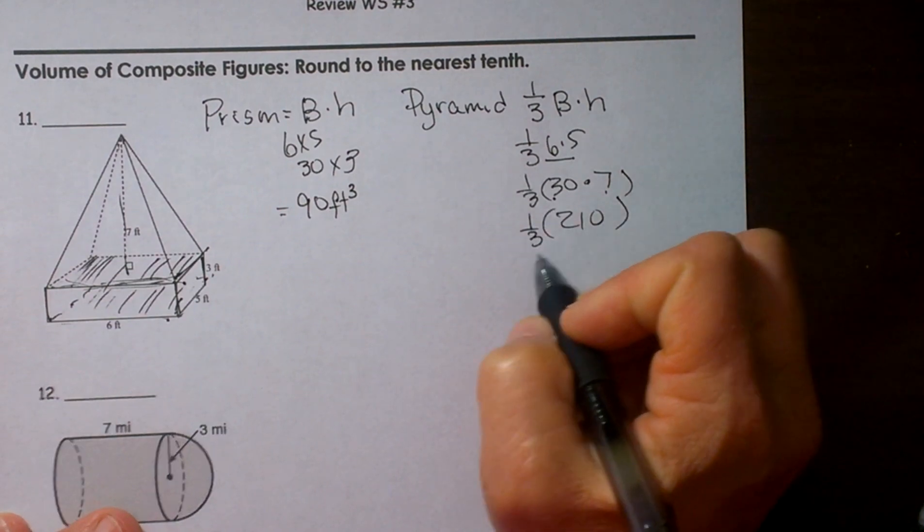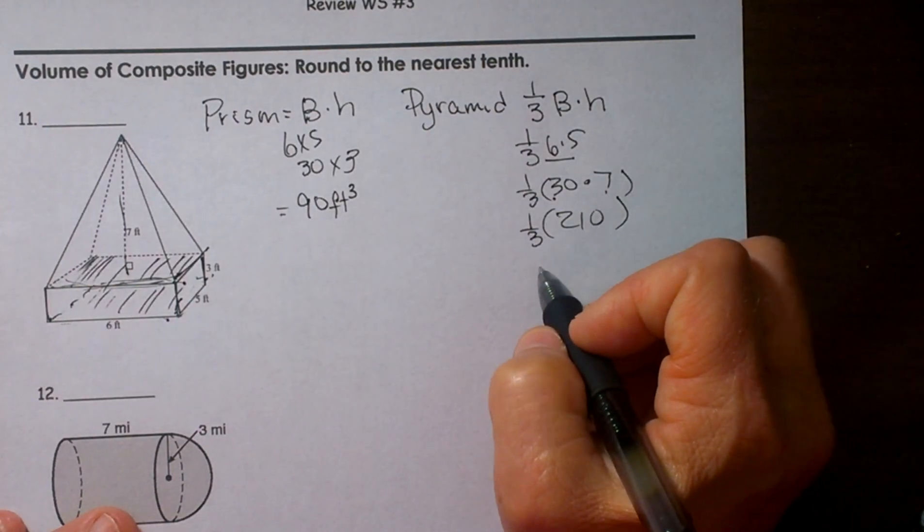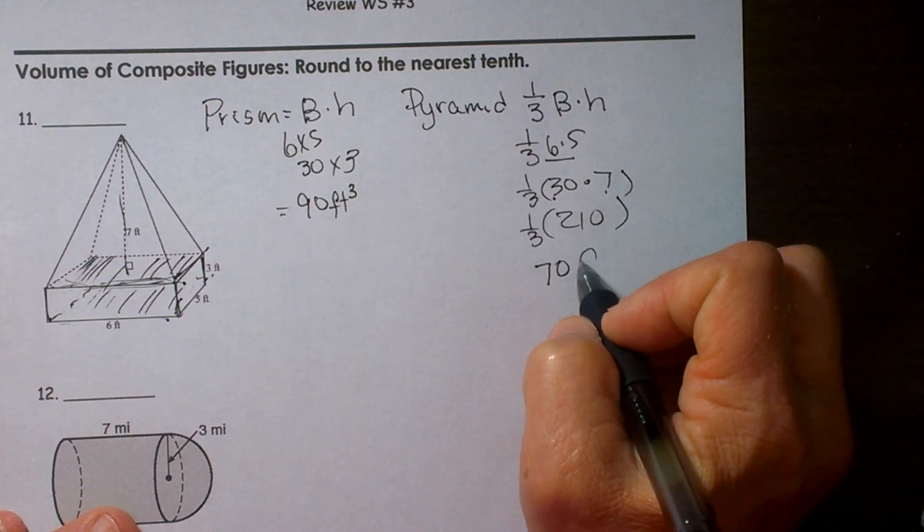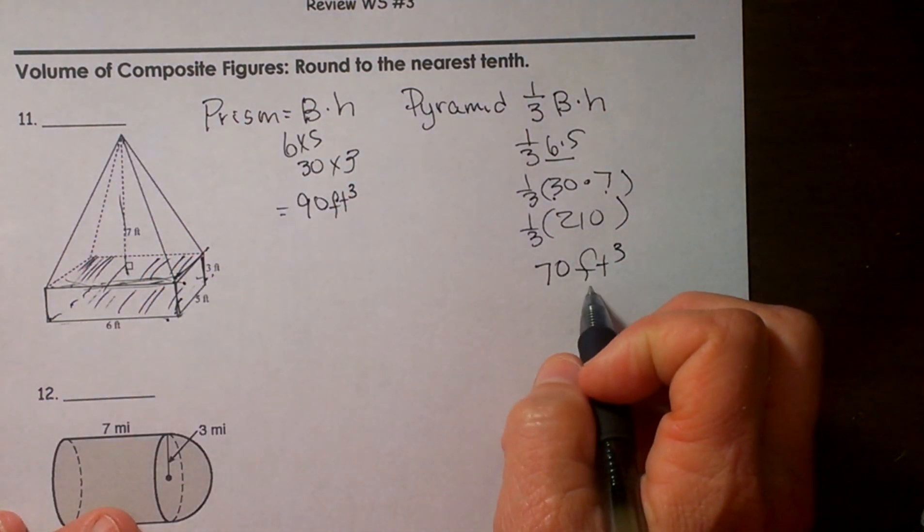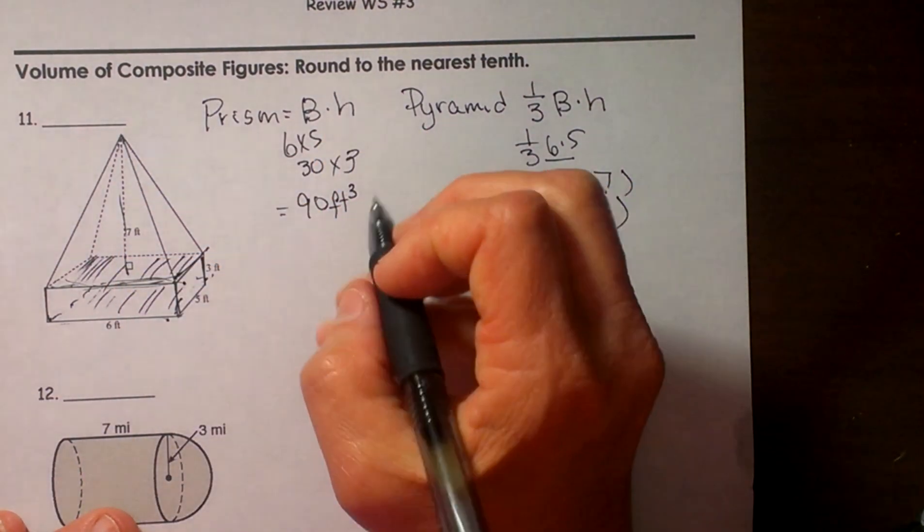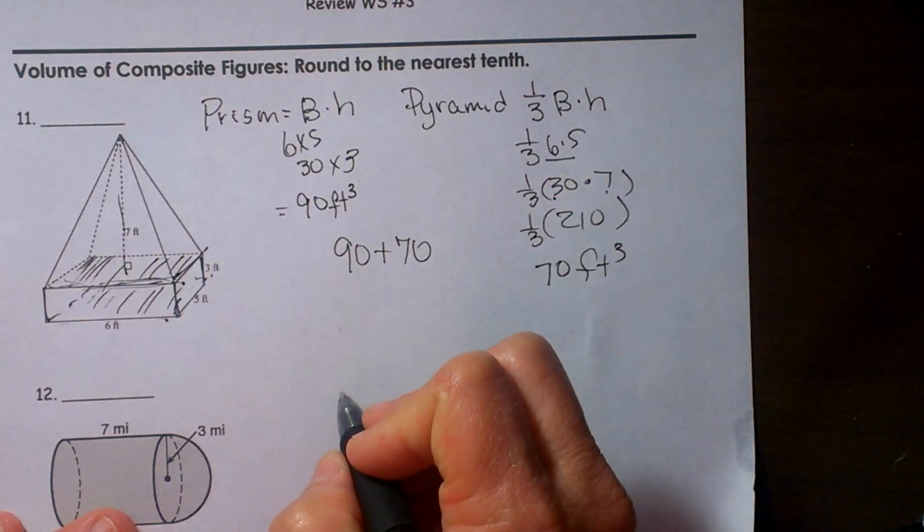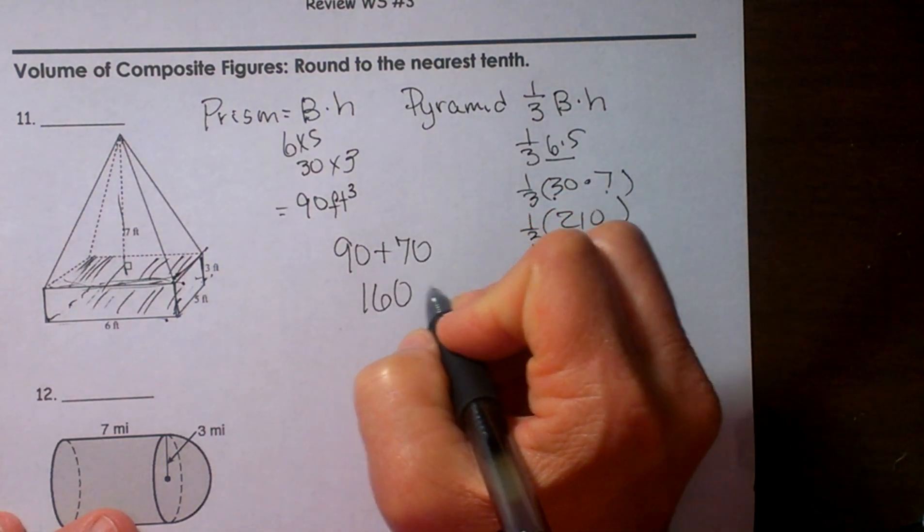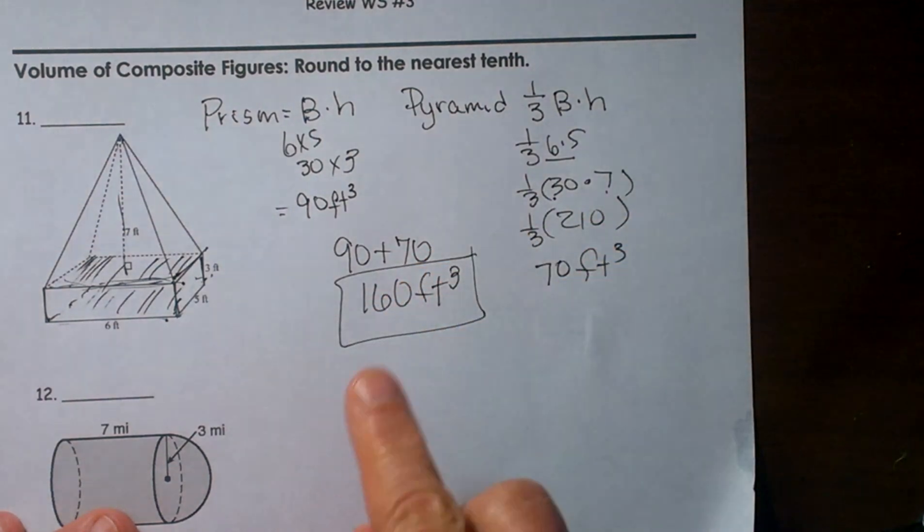So that gives us 30 times 7 which is 210. Now 210 times 1 third which is also the same thing as dividing by 3. That just gives us 70. So the volume of our pyramid over here is 70 cubic feet. Now since they are a composite figure we are going to take both of these and just add them together to get the volume of the entire figure. So that is 160 cubic feet and that is how you would find the volume.